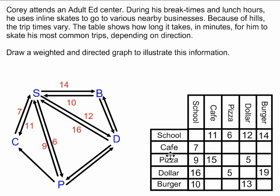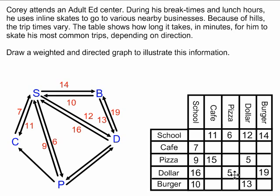From the burger place to the dollar store takes 13 minutes, and from the dollar store to the burger place takes 19 minutes. From the dollar store to the pizza place takes 5 minutes, and from the pizza place to the dollar store also takes 5 minutes — this shows us that the ground is very level between those two locations. From the pizza place to the cafe takes 15 minutes.